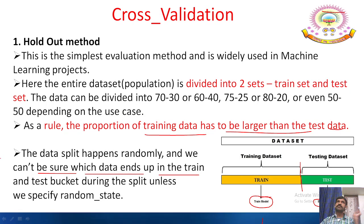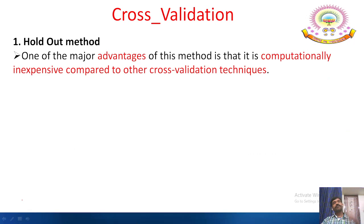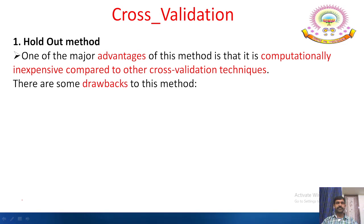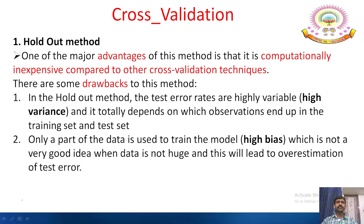One major advantage of the holdout method is that it is computationally inexpensive compared to other cross validation techniques. However, test error rates are highly variable and depend on which observations end up in the training and test sets. Only a part of the data is used to train the model, which introduces high bias and leads to overestimation of the test error. In Python, we use from sklearn.model_selection import train_test_split, and the data is split using the train_test_split function with a specified test size and random state.